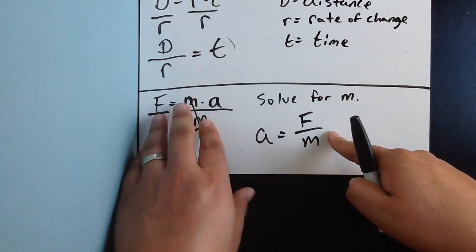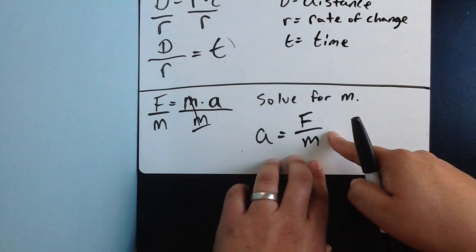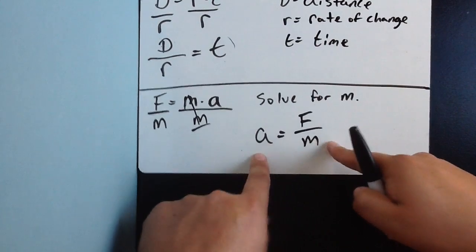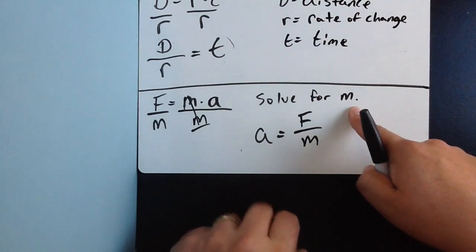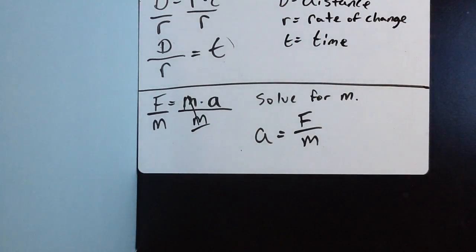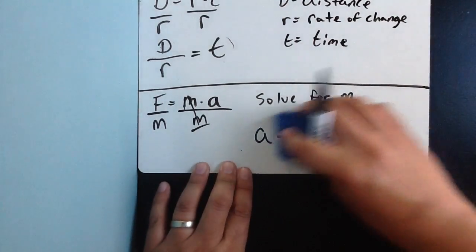So, we first take the formula here, manipulate it so it's set up for what we want to solve for, and then that's it. Now, notice that I put solve for m, and I solve for a. So, let's redo this again.